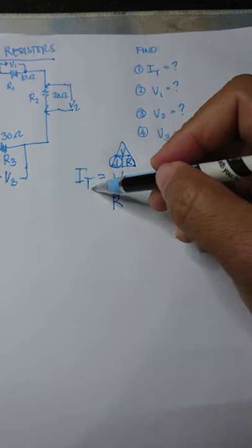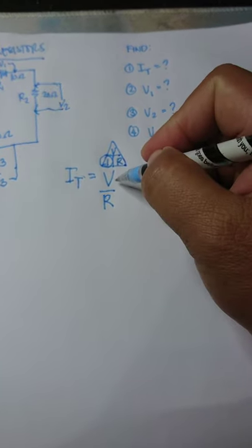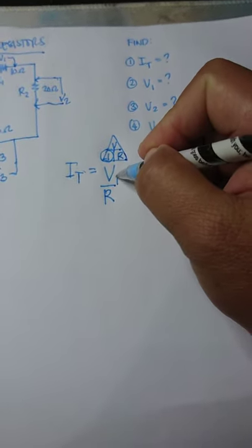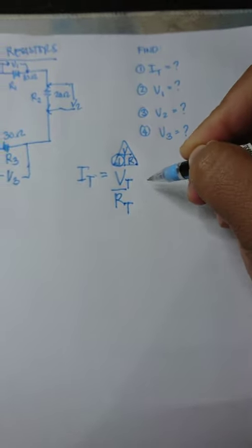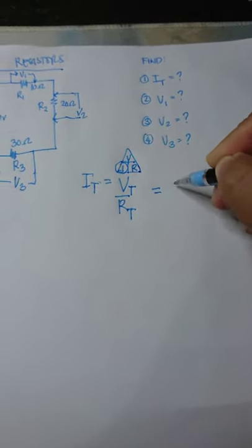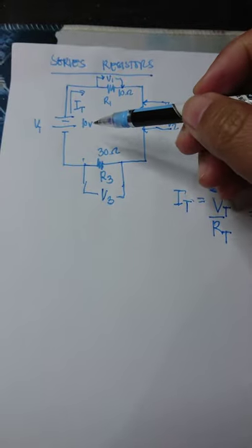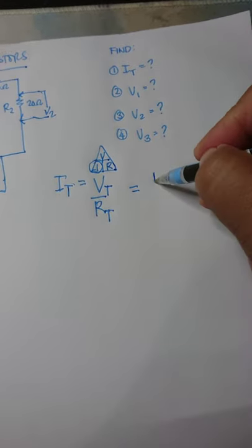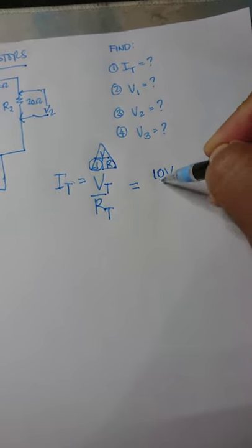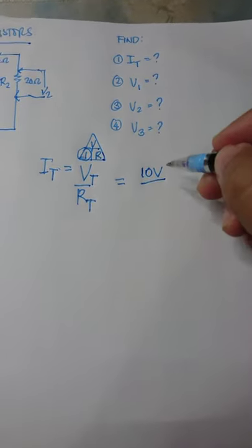Since we are looking for the total, we need to use the quantities for total voltage and total resistance. We know that the total voltage is equal to the supply voltage, which is 10 volts. How about the total resistance?